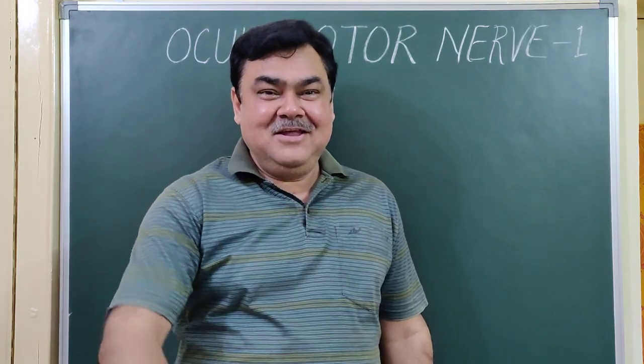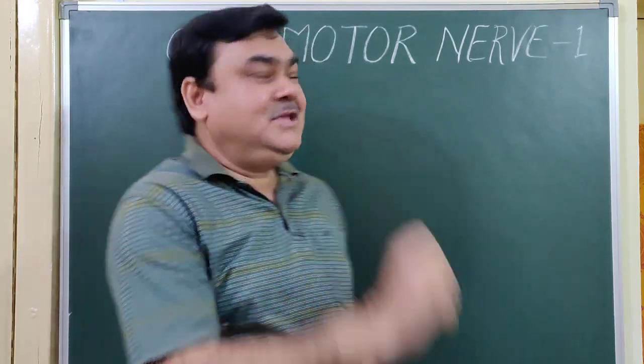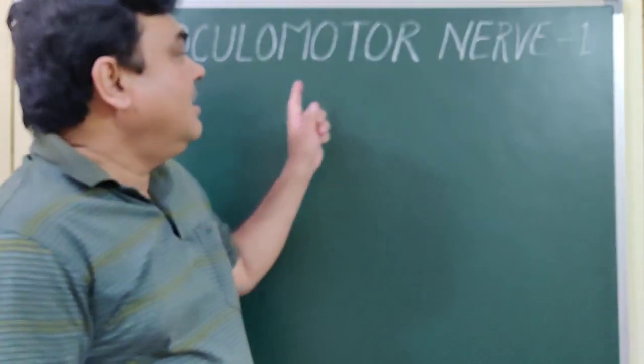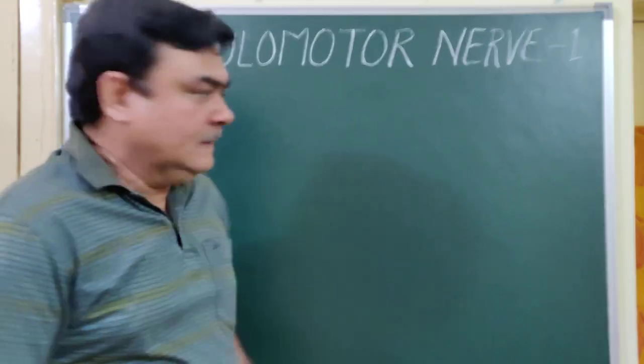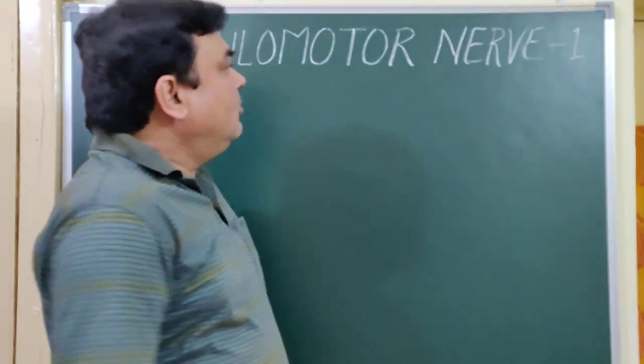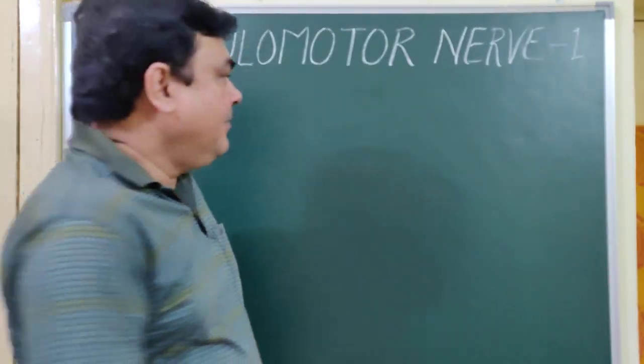Now we will discuss about the anatomy of the oculomotor nerve. The oculomotor nerve is the third cranial nerve.